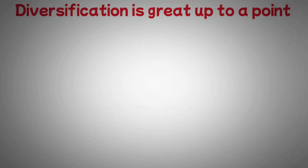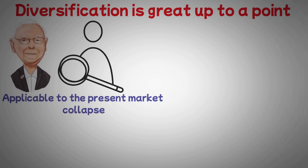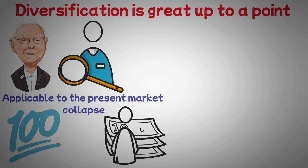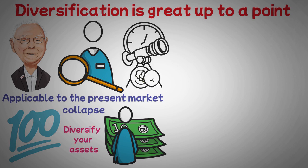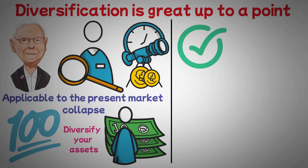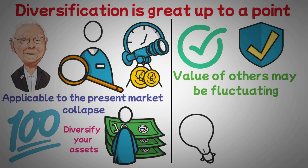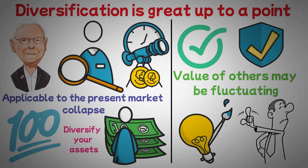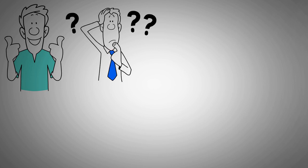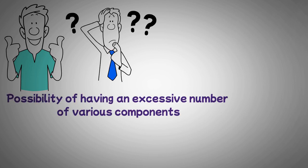Diversification is great up to a point. Another wise remark from Munger that might be applicable to the present market collapse is the concept of excessive diversification is stupidity. Diversification is one of the best ways to smooth out the bumps in the road of investment. Place your money in a variety of investments to diversify your assets. The returns on different investment types change over time. While the value of some goods may be rising, declining, or remaining unchanged, the value of others may be fluctuating. Diversity may therefore protect your earnings. Diversification is a difficult idea that not everyone can understand right away. Anywhere, this is an excellent concept. Believe me, I am aware of how important this is to your financial security. The possibility of having an excessive number of various components exists.